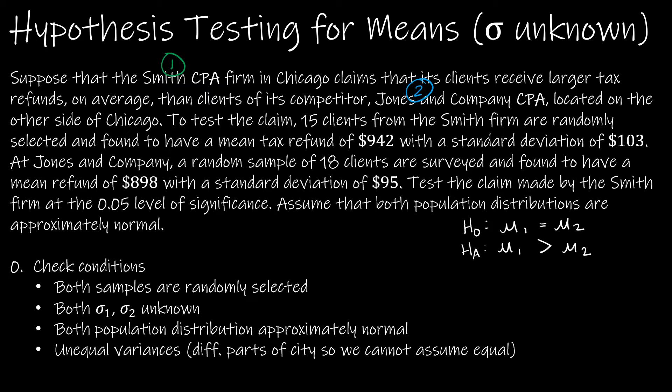To test the claim, we have 15 clients from Smith. So that's n1. Randomly selected and found to have a mean tax refund x bar one of 942 with a standard deviation s one of 103.